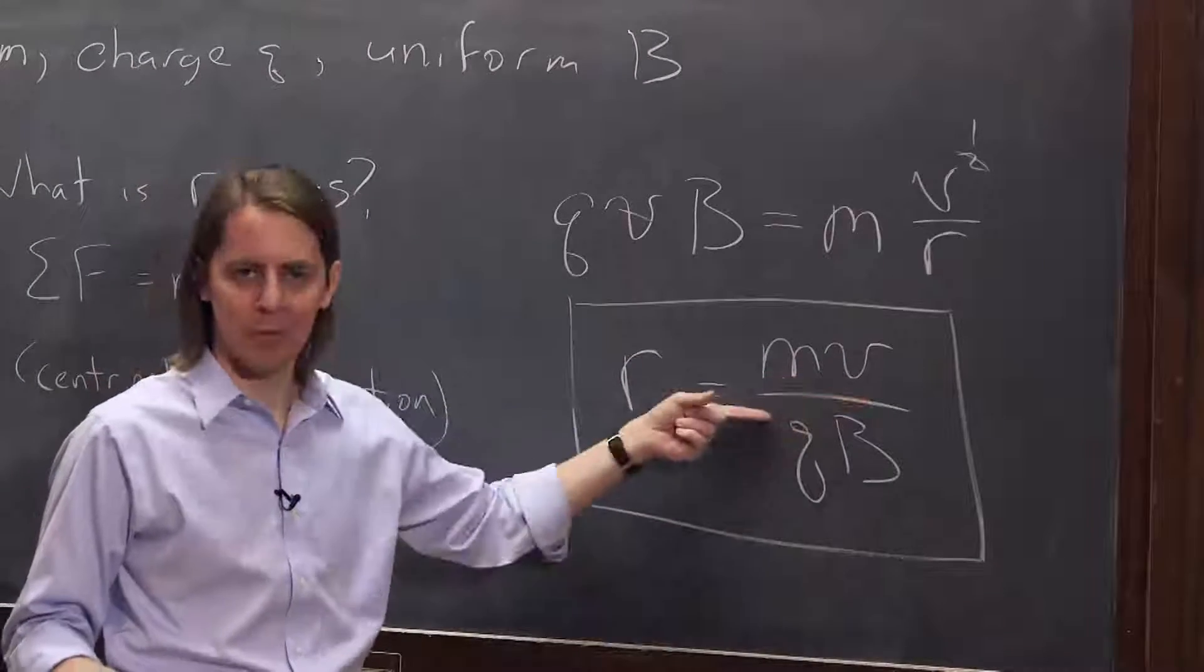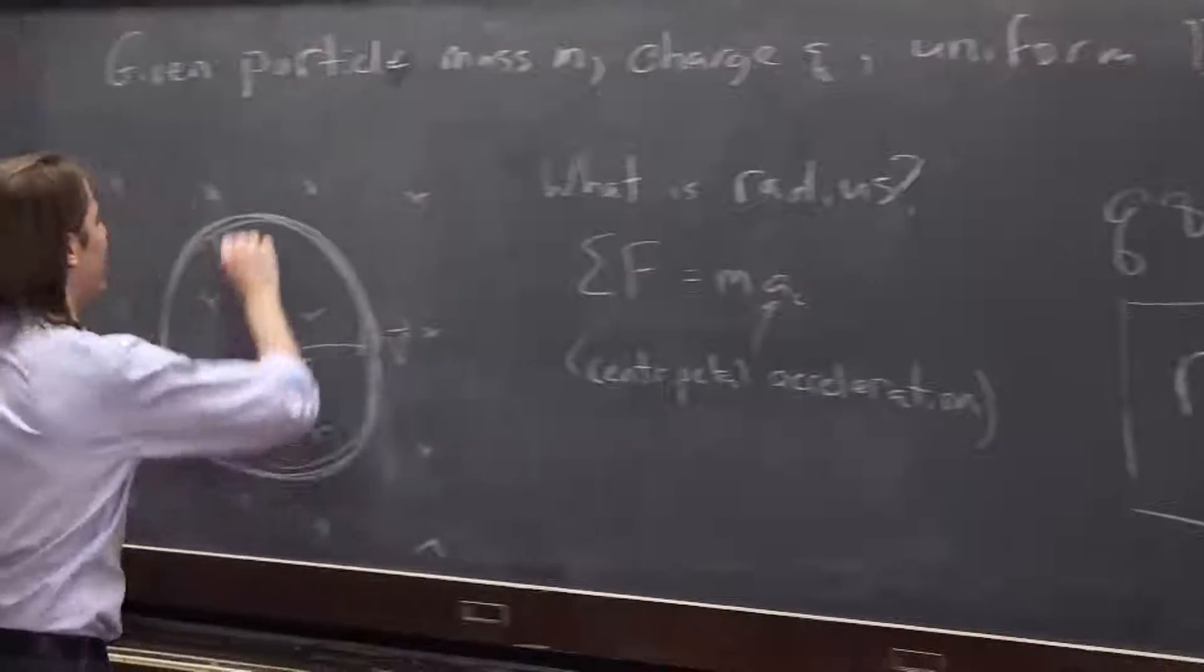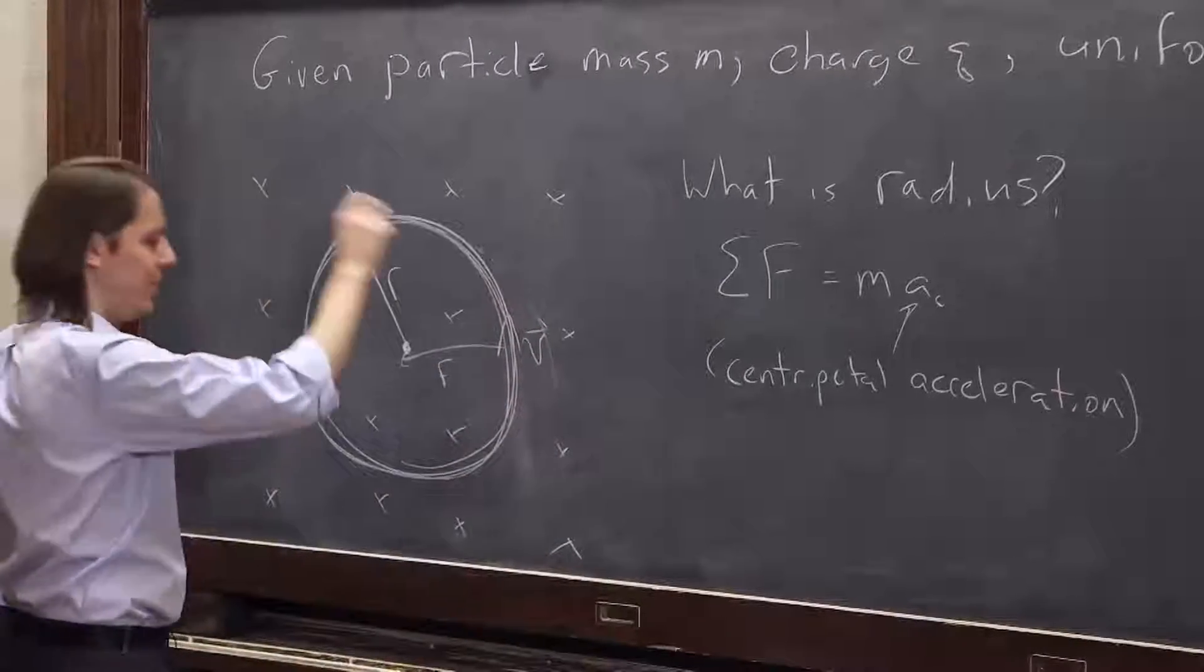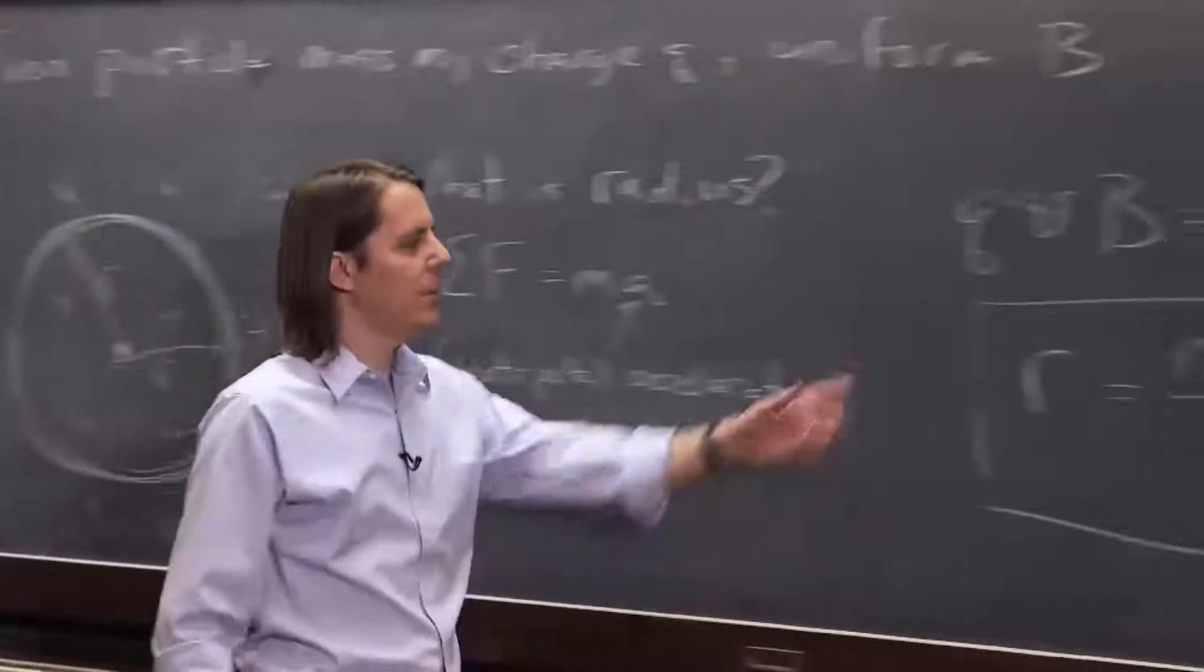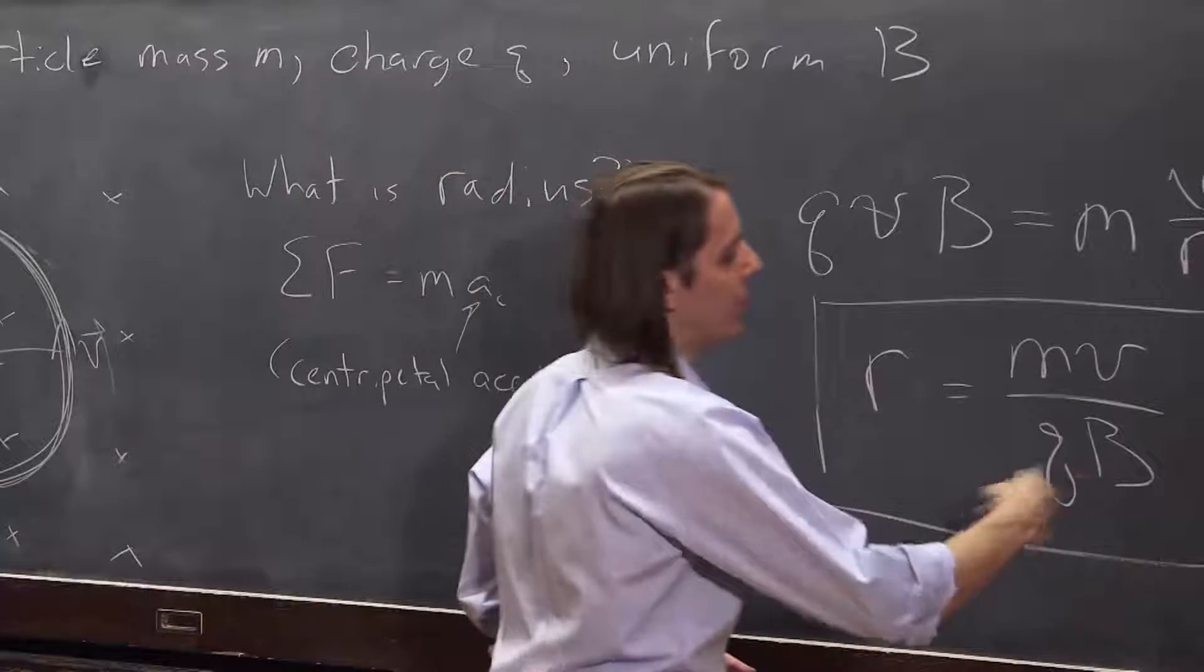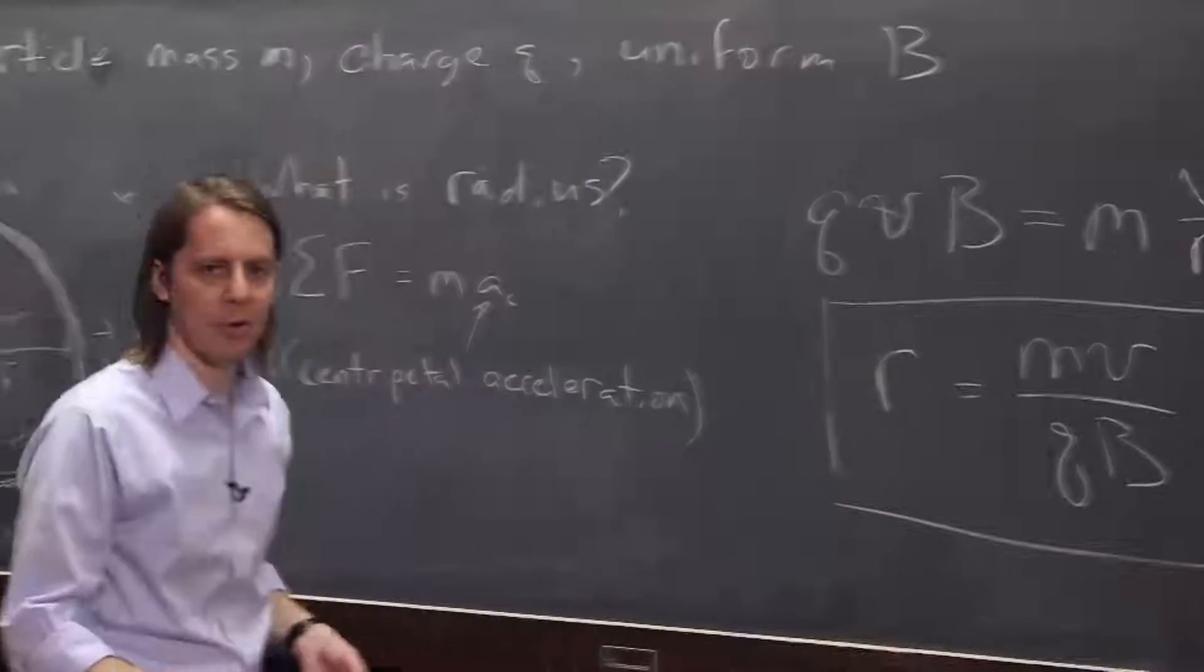This is the momentum of the particle, right? Mass times velocity. It kind of makes sense, the more momentum it has, the harder it is for the field to get it to turn. So the bigger the momentum, the bigger the radius. That's why it's in the top. And q b are related to the force. The bigger q, the bigger the force. The bigger b, the bigger the force.